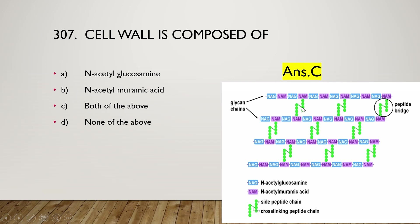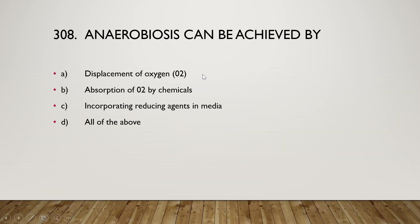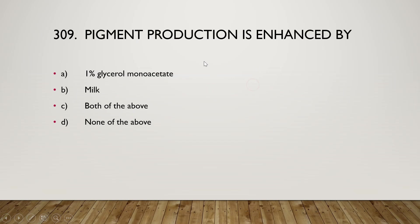The next question: anaerobiasis can be achieved by displacement of oxygen, absorption of O2 by chemicals, incorporating reducing agents in media, or all of the above. The right answer is option D — all of the above can be used to achieve anaerobiasis.